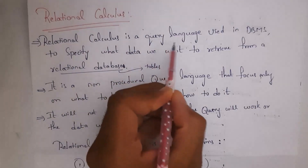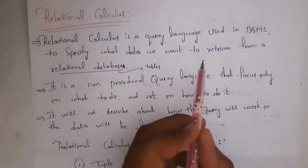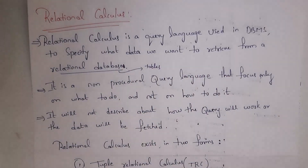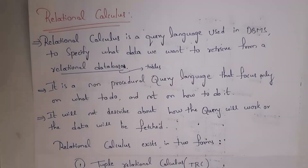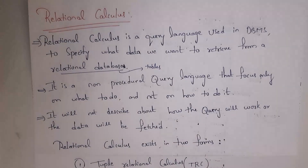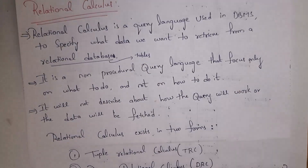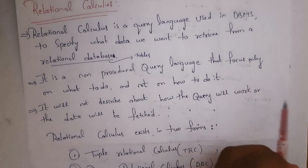Relational calculus is a query language used in DBMS to specify what data we want to retrieve from a relational database. Relational calculus is nothing but a query language — a query is nothing but a question. For example, we will question our relational database: select the name of the student whose roll number is 21. By using this query language we can ask our database what data we want to retrieve from a table.